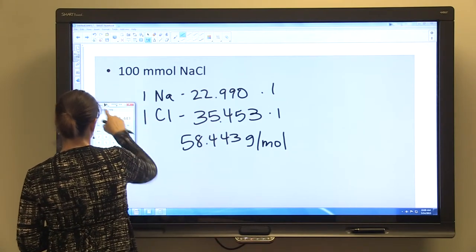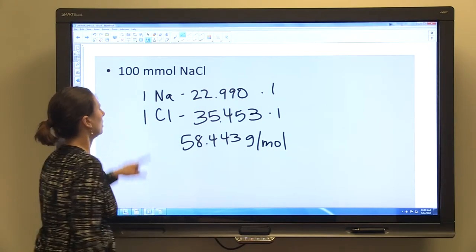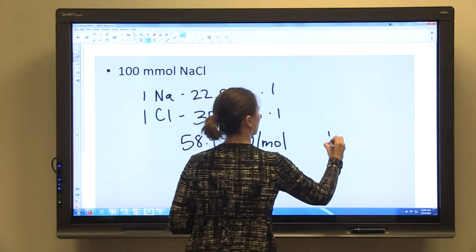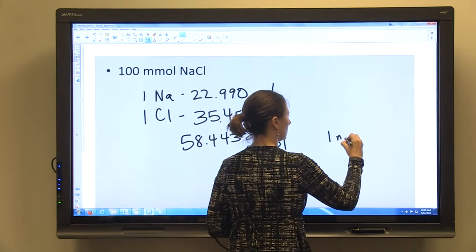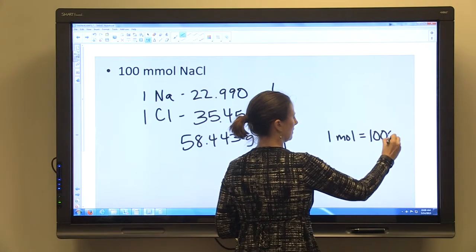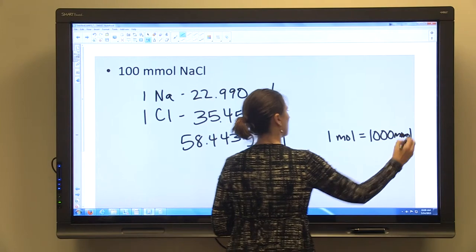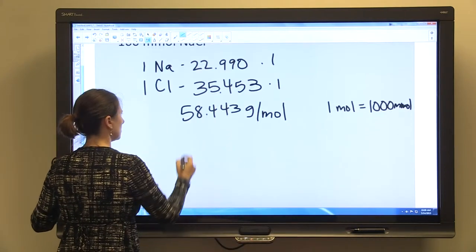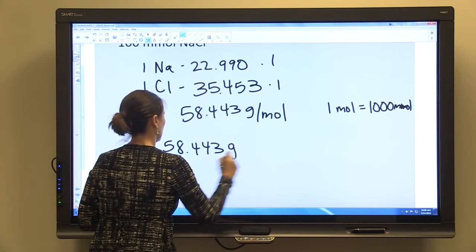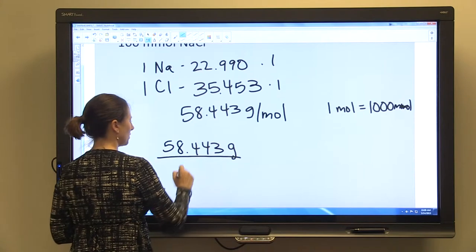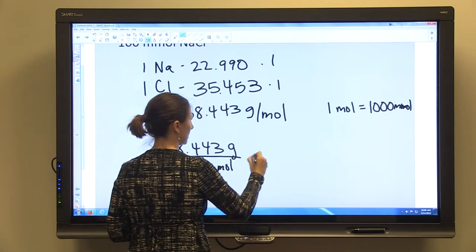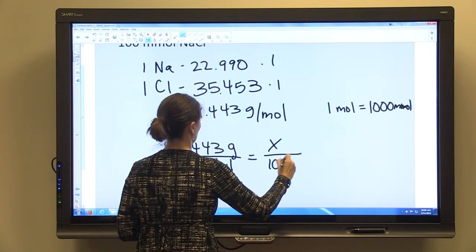But what we're looking for is 100 millimolar NaCl. We know that one mole is equal to 1000 millimolar. So when we're setting up our proportion, 58.443 grams per 1000 millimolar NaCl is equal to x per 100 millimolar NaCl.